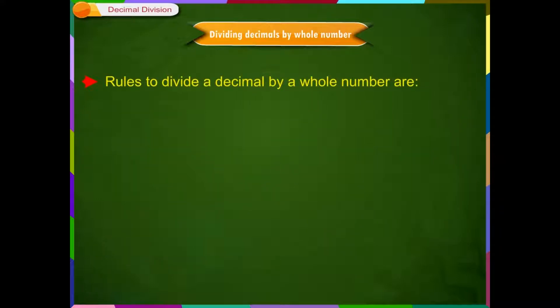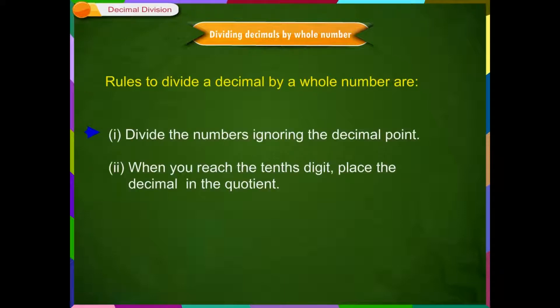The rules to divide a decimal by a whole number are: 1. Divide the numbers ignoring the decimal point. 2. When you reach the tenths digit, place the decimal in the quotient. Let us see some examples to understand this concept better.